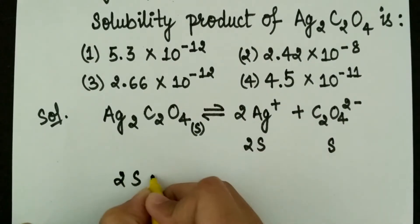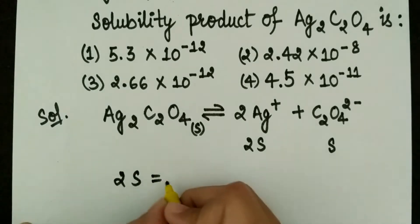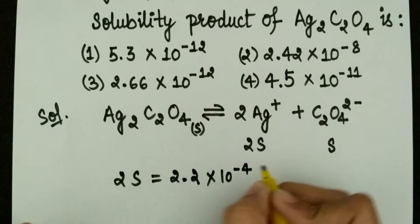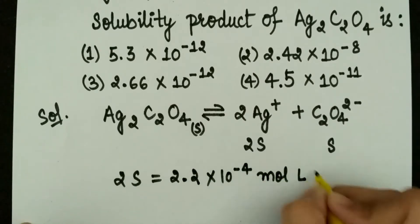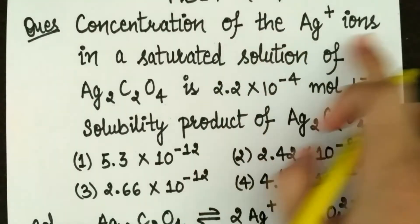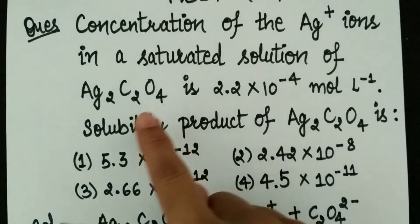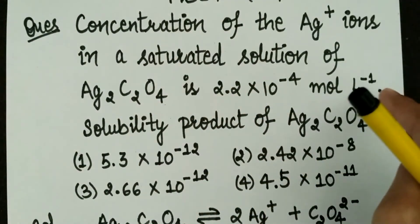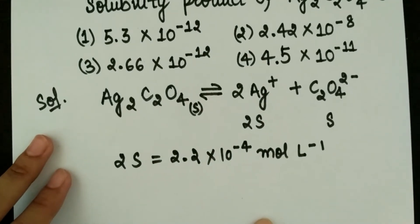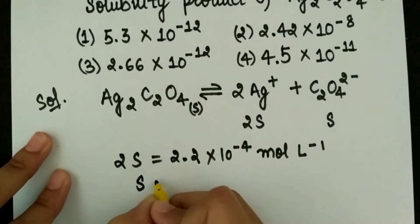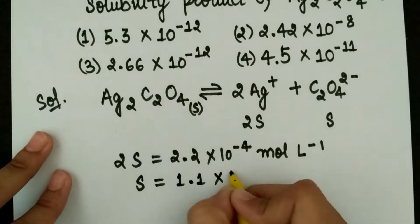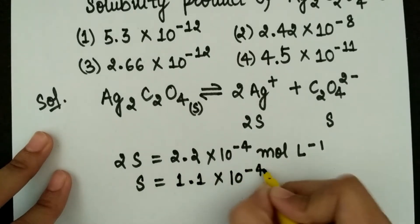We can write 2S equals 2.2 × 10⁻⁴ mole per liter, because the concentration of Ag+ ions in the saturated solution of Ag2C2O4 is given as 2.2 × 10⁻⁴. So S is half of that, which means S equals 1.1 × 10⁻⁴ mole per liter.